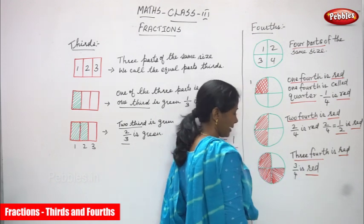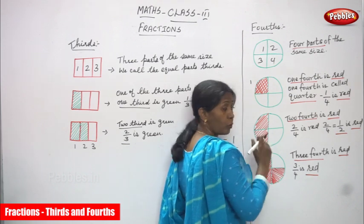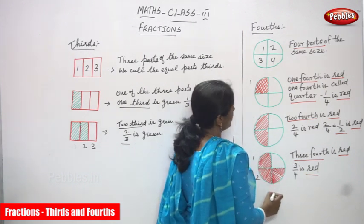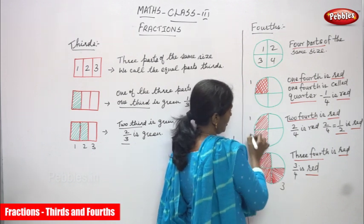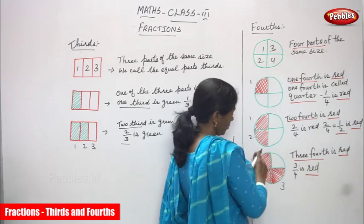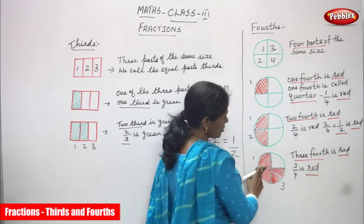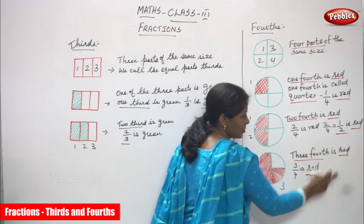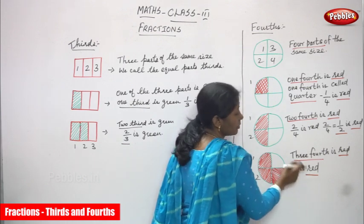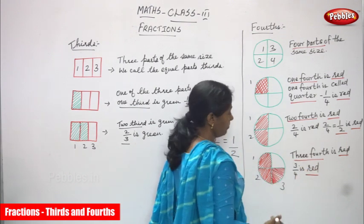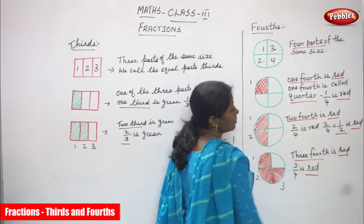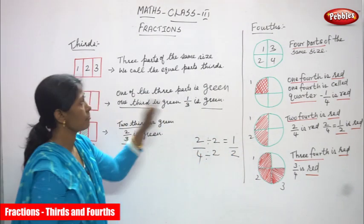Now the third diagram — three fourths is red in color. This is the same circle, cut into four equal parts. I shaded three parts in red: one, two, and three — three parts. So three fourths is red in color. In fraction, three by four is red. Three fourths means three by four — in four parts I shaded three parts in red. I think you understand thirds and fourths, and also halves.